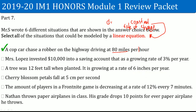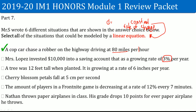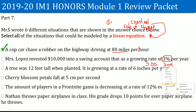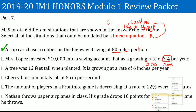Mr. Lopez invested $10,000 in a savings account that grows 3% per year. Because it is a percentage, the first year it grows by $300, but the second year it grows by more because there is more money. That percentage changes the amount every single year — it is not a constant rate of change, so this is not linear.